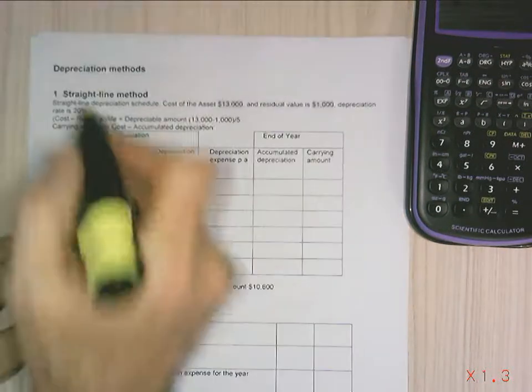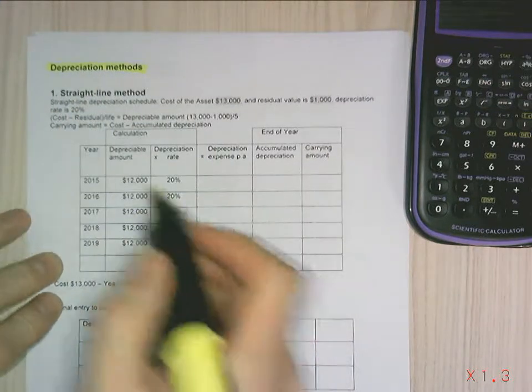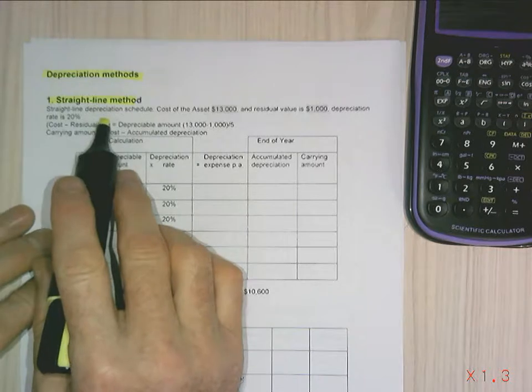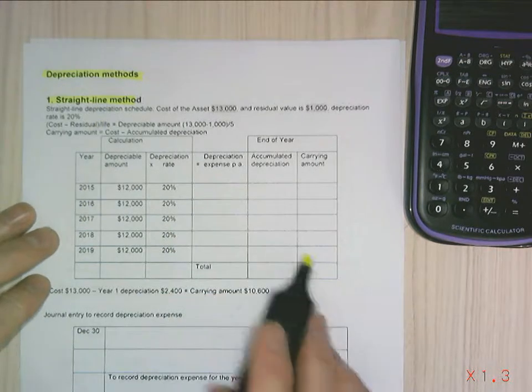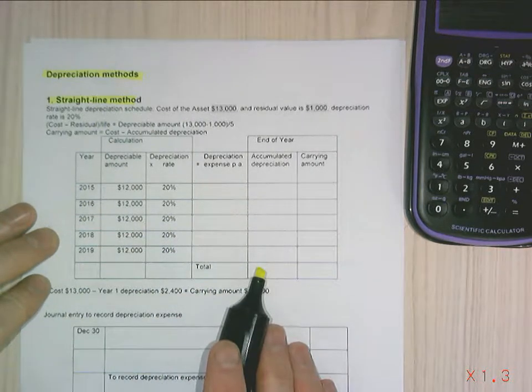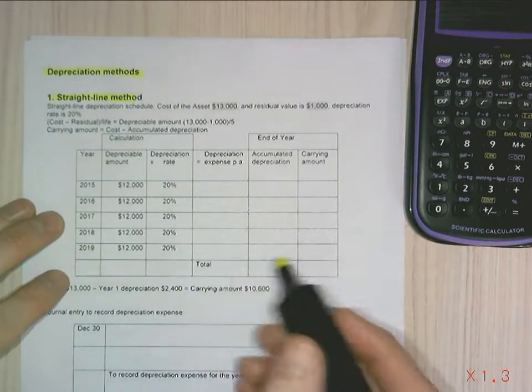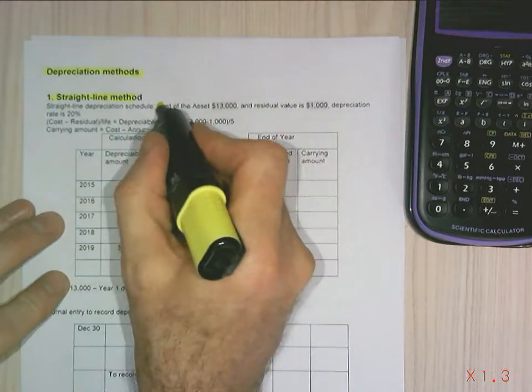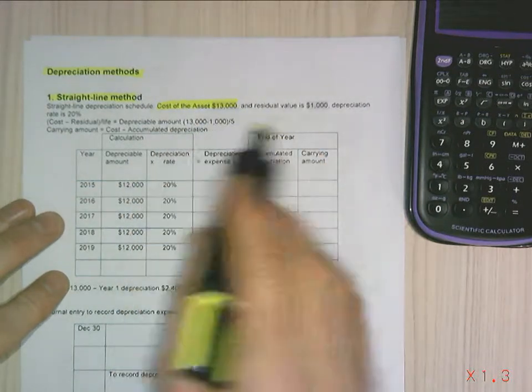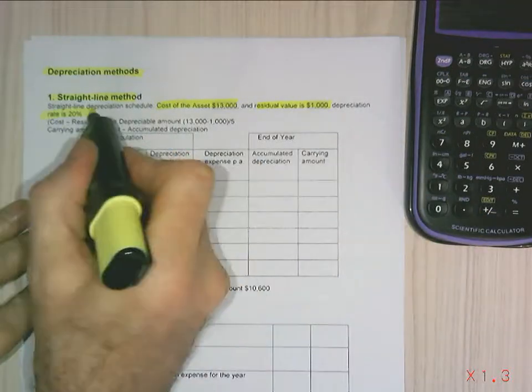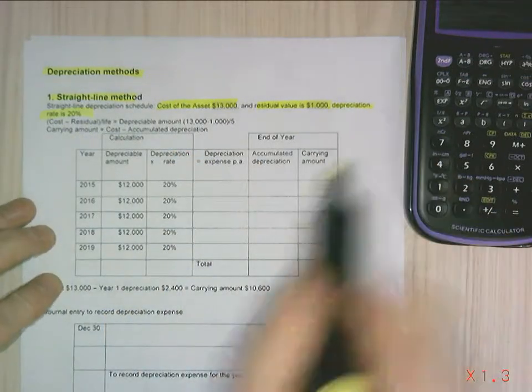All right, now looking at the depreciation methods, the first depreciation method we're going to look at is straight-line method. This is a depreciation schedule and we're going to complete this depreciation schedule to give you an idea of how depreciation methods differ. The cost of our asset is $13,000, has a residual value of $1,000, and the depreciation rate is 20%.